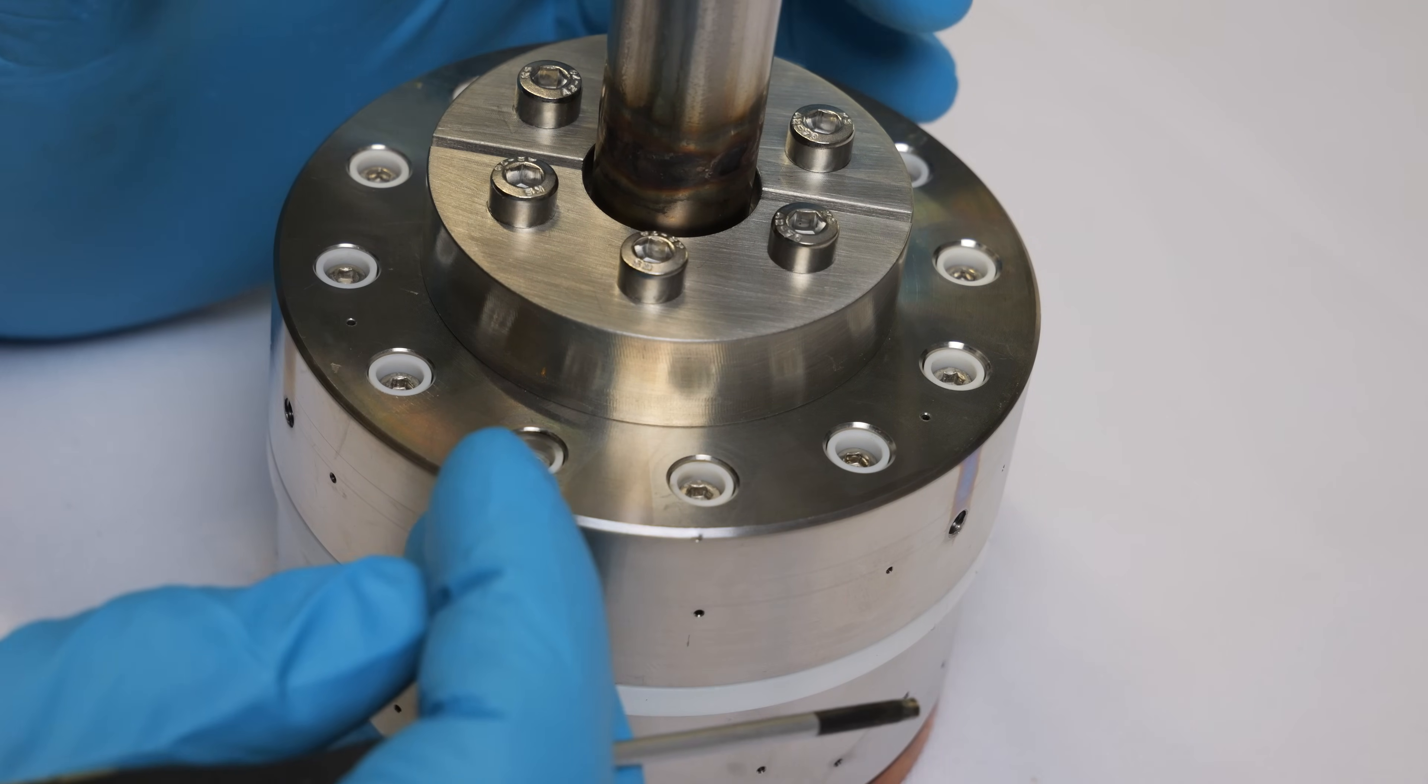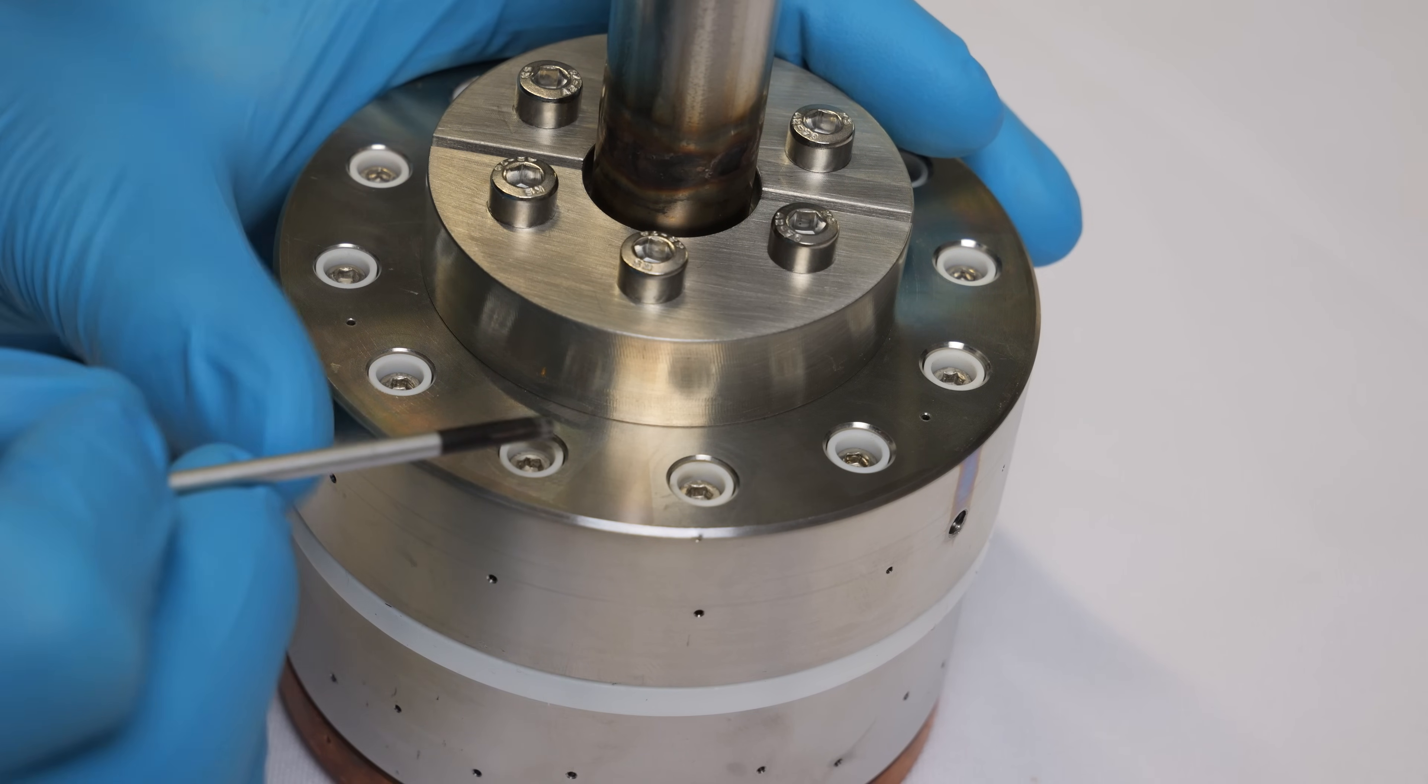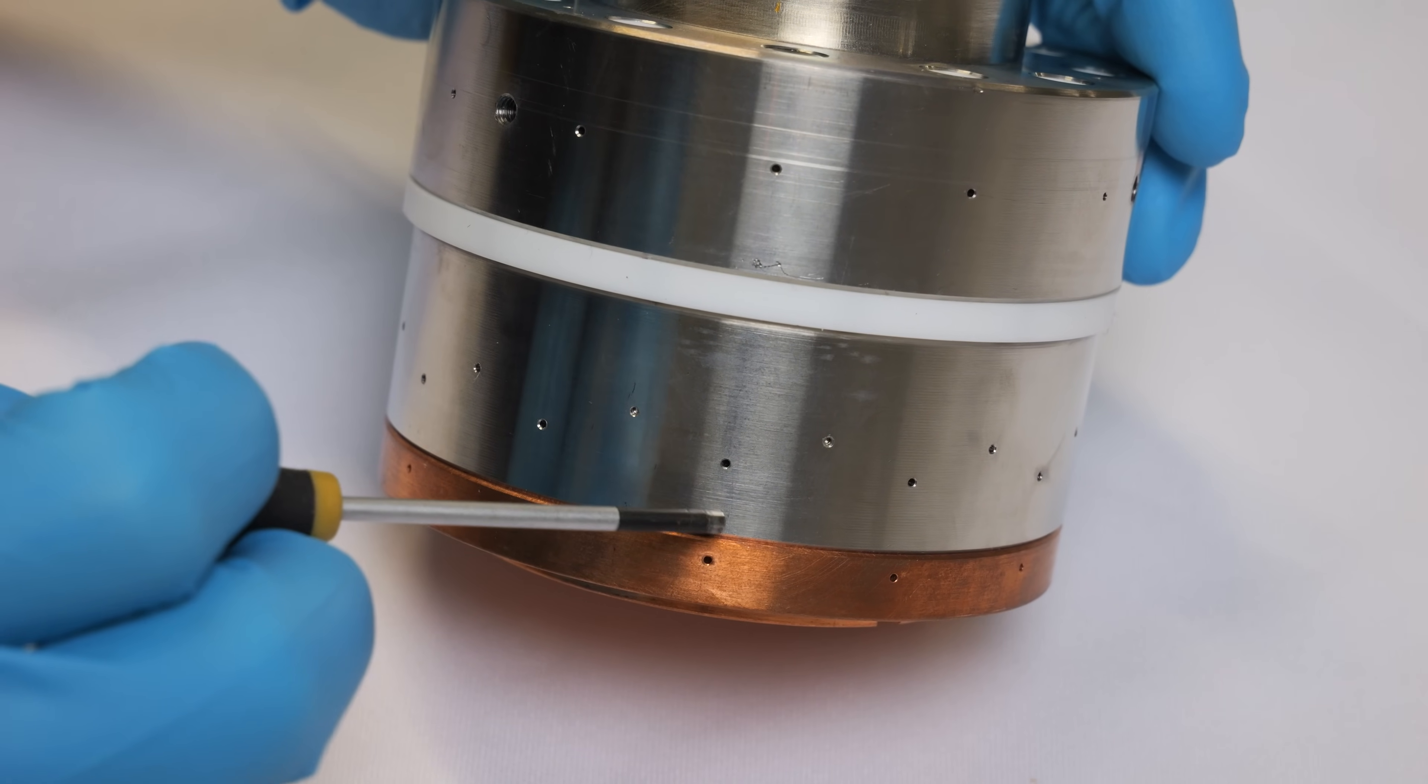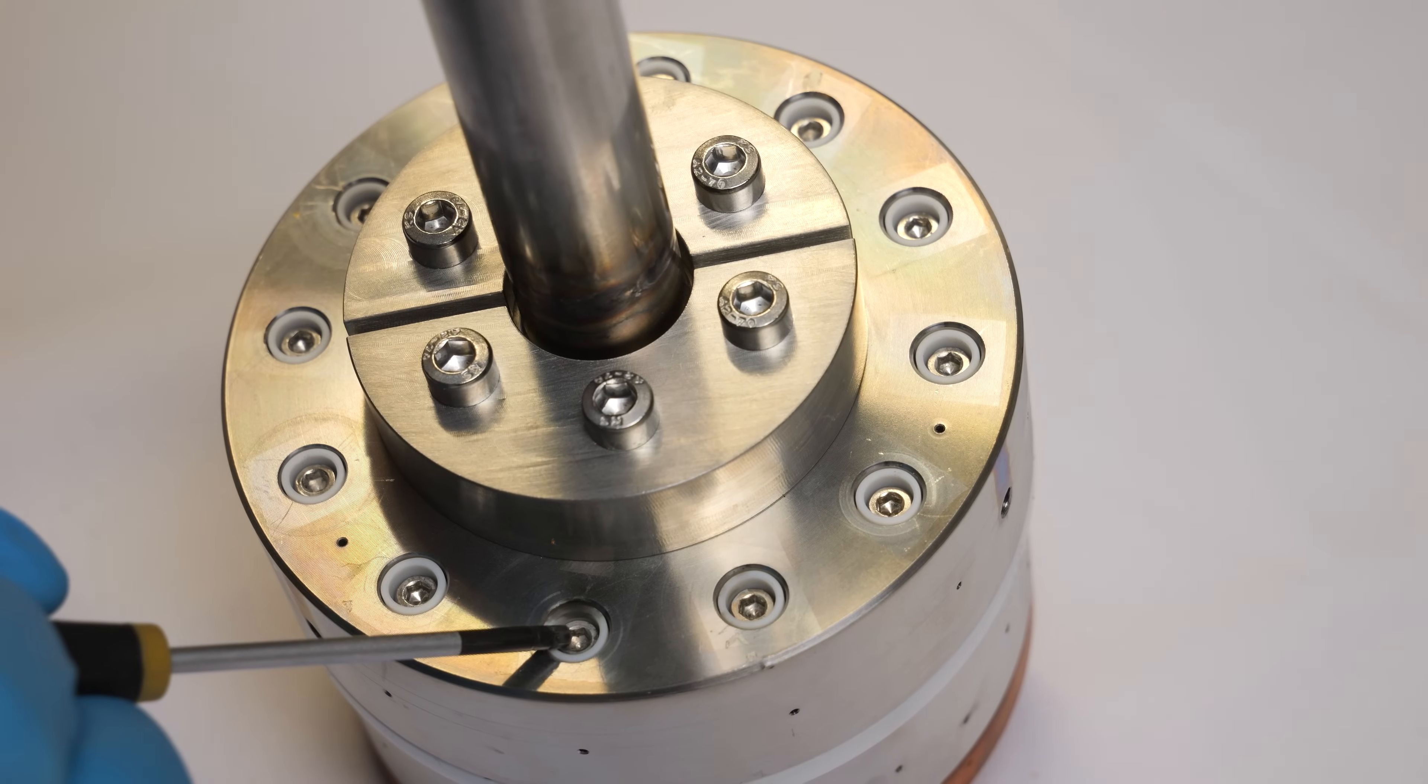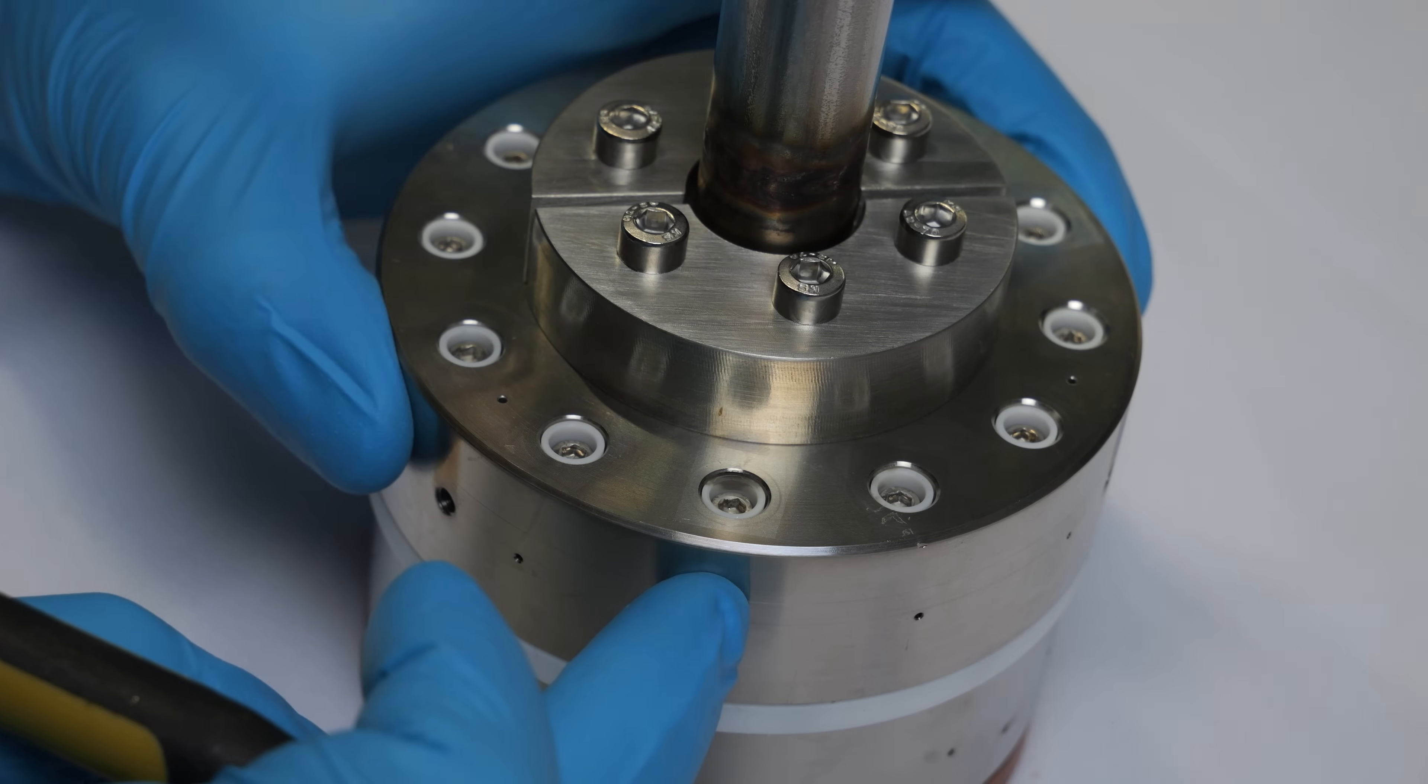You just saw me remove some Kapton tape and if you've watched my other video you know that I added it because I was suspecting that arcing is happening between the screws down here and this bottom part which is at ground potential. The complete upper part here is at a high voltage potential which means that the screws which are connecting it to this bottom part are also at a high voltage potential. For that reason I created these PTFE insulators here which insulate them to this bottom part.